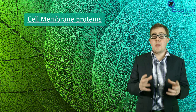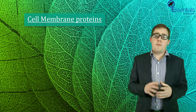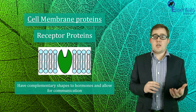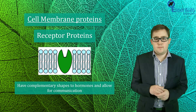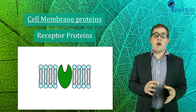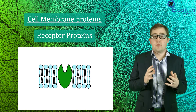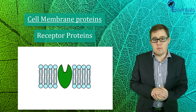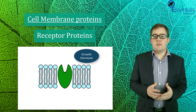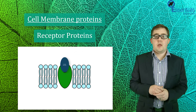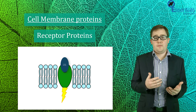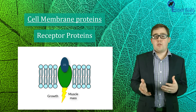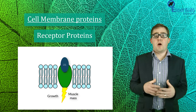Now let's take a look at some of the proteins which embed themselves in the membrane. The first type are called receptor proteins. These proteins have shapes that are complementary to specific hormones and therefore allow for the communication of messages. Many hormones transported in the blood can only bind and act on cells if these cells have complementary protein receptors on the outside of their membranes. A good example is growth hormones, which bind to specific growth hormone receptors. When this binding occurs, signals are sent into the cell initiating cellular changes. Human growth hormone stimulates things like growth, especially in childhood, strengthening bone and increasing muscle mass.